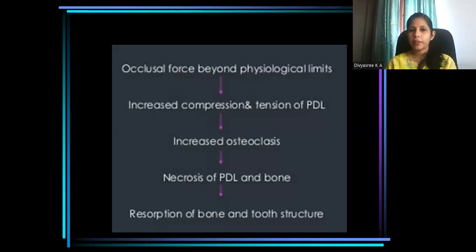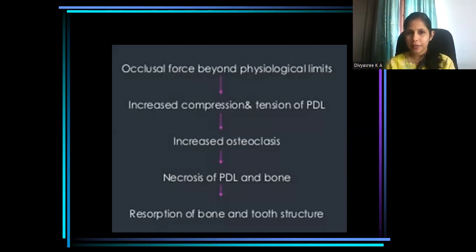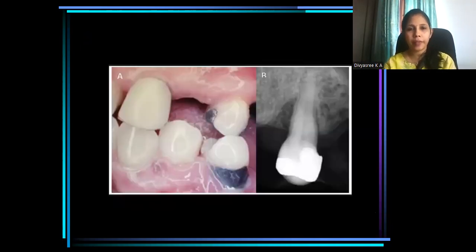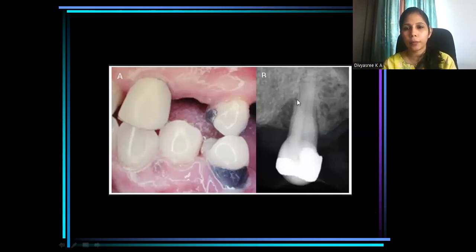Whenever the occlusal force exceeds a particular limit — whenever it goes beyond the physiologic limit — it will result in compression of periodontal ligament space, increased osteoclastic activity, necrosis of the periodontal ligament, and ultimately resorption of alveolar bone. Here you can see a tooth under trauma from occlusion and the alveolar bone loss that has occurred due to trauma.